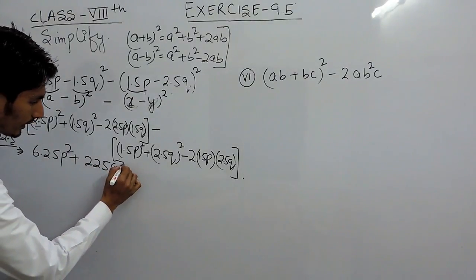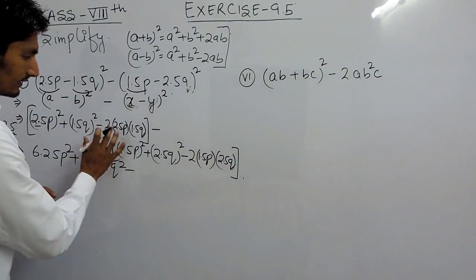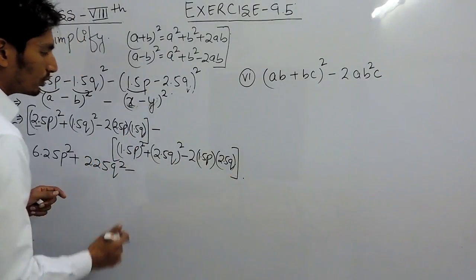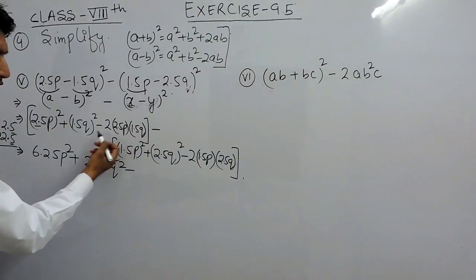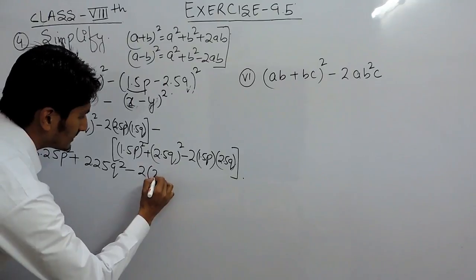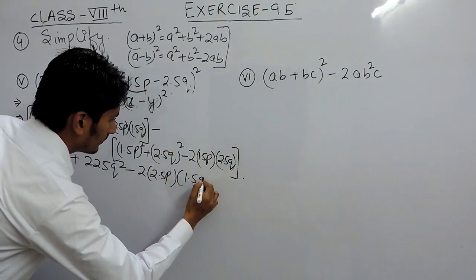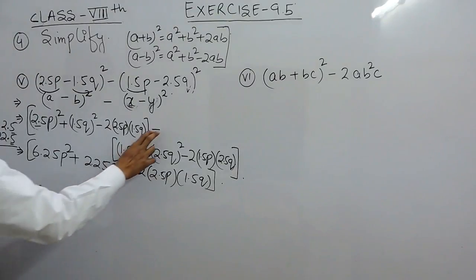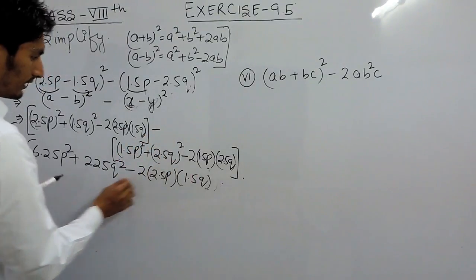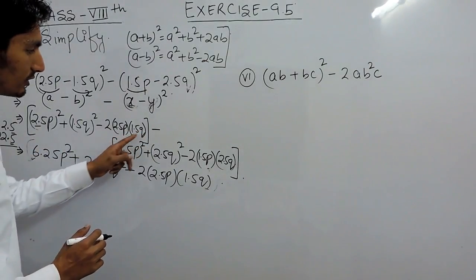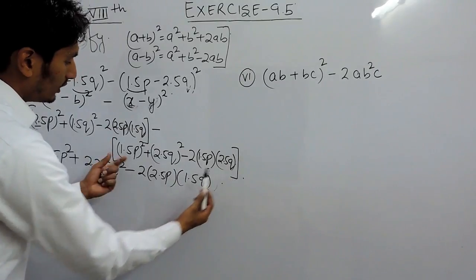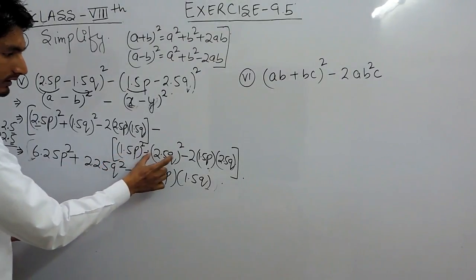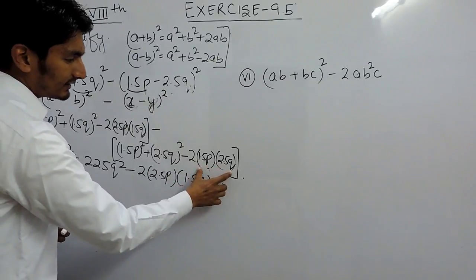The middle terms — 2 × 2.5p × 1.5q — I am not going to multiply out, because ultimately this value and the corresponding value in the second expression are going to cancel out. Now, if I directly open the bracket — since there is a negative sign outside the second bracket — all the signs inside get changed. So positive terms become negative and negative terms become positive.